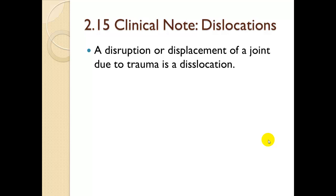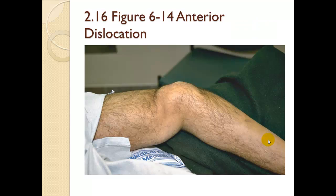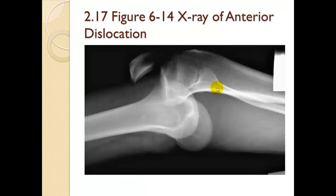Clinical note — dislocations: a disruption or displacement of a joint due to trauma. This is an anterior dislocation of a knee — things do not look right in that joint, with the patella popped out in the anterior direction. An x-ray shows the lower knee has moved out of position.